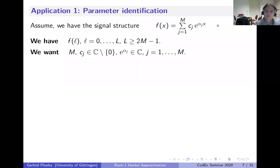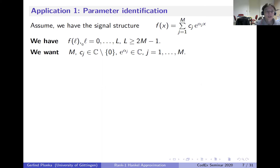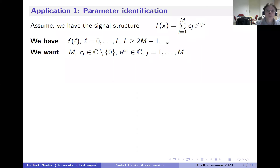We would like to reconstruct all the parameters just by using function values. For simplicity, I assume we have function values F(l) equidistantly starting with zero. We need enough values—at least as many as we have unknowns. If m is given, we have 2m unknowns, so we need l to be larger than 2m−1.